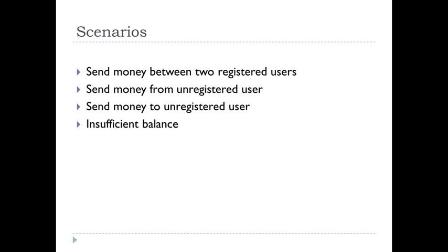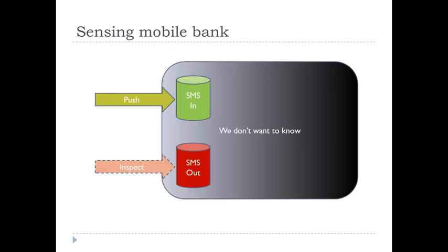The first scenario is money transfer between two registered users — the essential positive scenario where everything goes fine. But that's not sufficient to implement this feature; we also need three negative scenarios because things can go wrong. For example, if a customer who is not registered tries to send money, they should get back a message saying they can't do that. The same goes if you try to send money to another person not registered in the bank, or if you don't have enough money — you should get an error message via SMS. SMS will be the only way to communicate with the bank and get output from our operations.